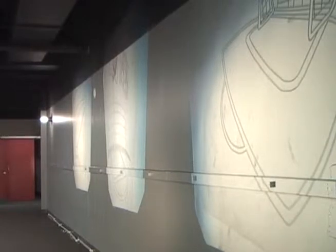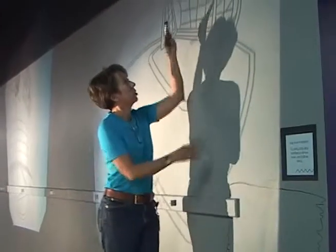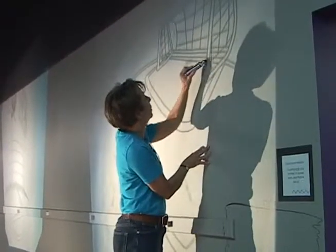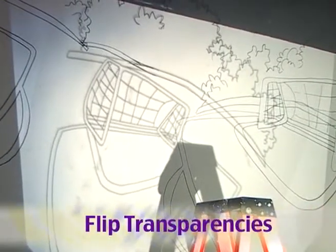After placing your transparencies according to your liking, trace the figures on the wall with a black permanent marker. Remember that flipping your transparency will give you another perspective.